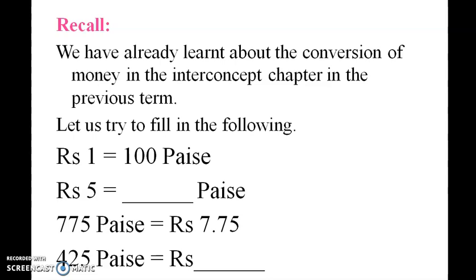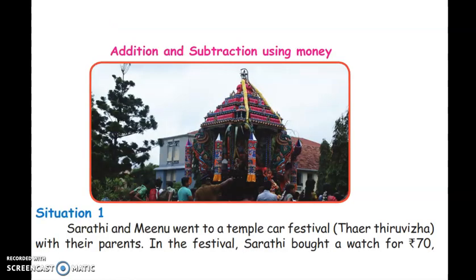100 paise is equal to 1 rupee. So 5 rupees equals 500 paise. 775 paise equals 7 rupees 75 paise. And 425 paise equals 4 rupees 25 paise.